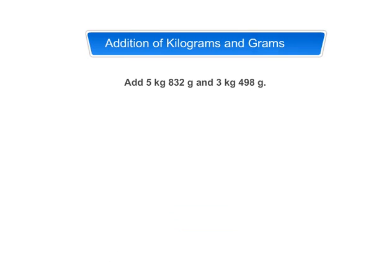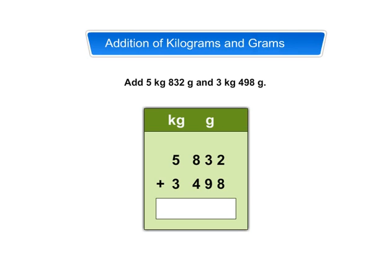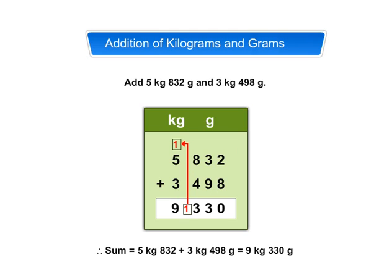Let us try one more example. Add 5 kilogram 832 gram and 3 kilogram 498 gram. Arrange the numbers in columns. Add grams to grams, then regroup gram into kg. Add kilograms to kilograms. So, the sum is equal to 9 kilogram 330 gram.